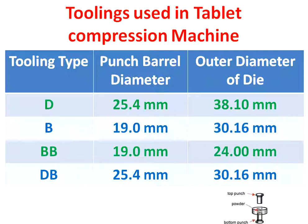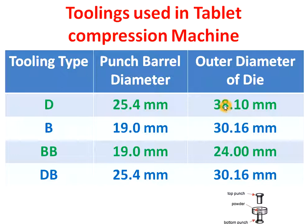Now we will see the diameter size of punch and die for all these tools. This column represents the punch barrel diameter — the diameter from here to here is known as barrel diameter. For D tooling, the barrel diameter is 25.4 mm, and the outer diameter of the die for D type tooling is 38.10 mm.